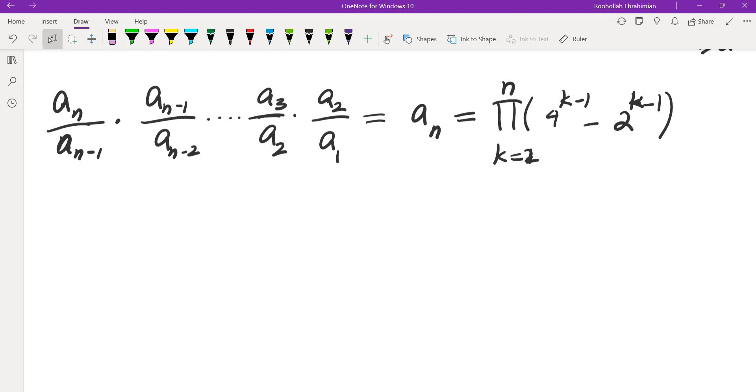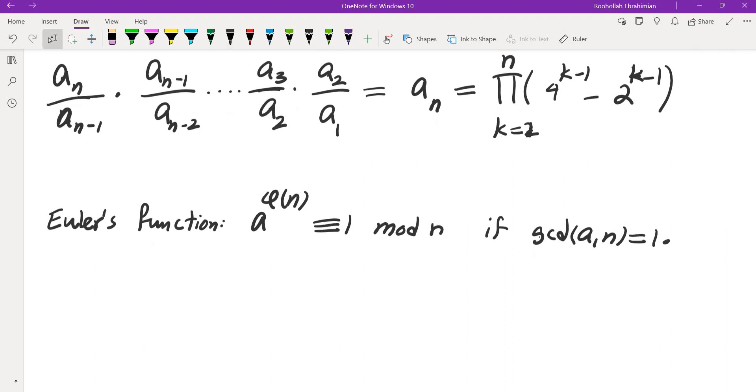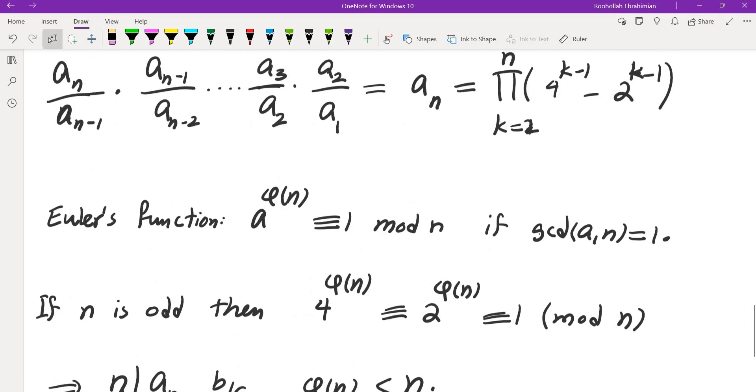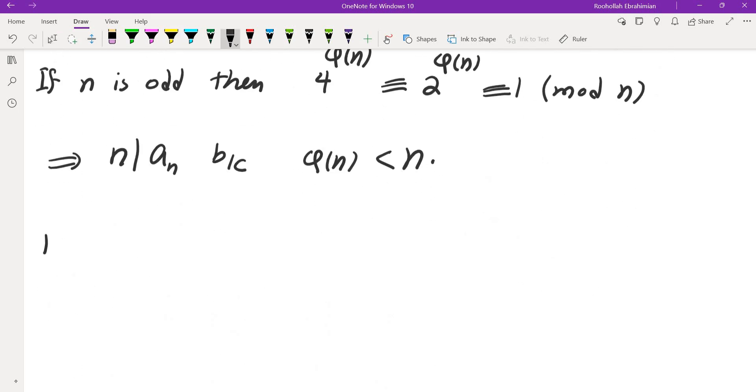How do we figure out what are the powers of a number mod n? Well, one way would be to use Euler's totient function. So Euler's totient function tells us that A to the power of phi of n is congruent to 1 mod n if A and n are relatively prime. So in this case, if n is odd, then I could say 4 to the phi of n and 2 to the phi of n are both 1 mod n. So we know that phi of n is less than n. Of course, that means that n divides A sub n because phi of n is less than n. So for every n that is odd, we do have the divisibility.